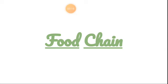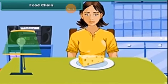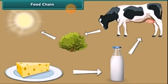Our next topic is the food chain. We are taking an example of cheese. Where does it come from? Cheese comes from milk and milk from the cow. The cow eats plants, and plants produce their food with the help of sunlight through the process of photosynthesis. The food chain is an arrangement in which energy passes from one organism to another organism.